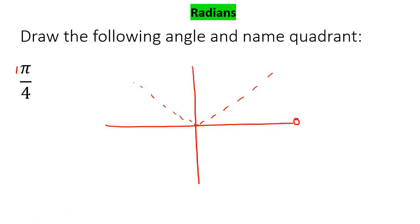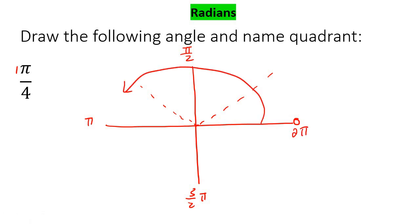We always start here at zero. This is pi over two, this is pi, this is three over two pi, and this is two pi. So when you watch the video on degrees, we always go this way. You're going to go one out of the four, so you go up to there, make a little line, and this angle here is going to be pi over four.